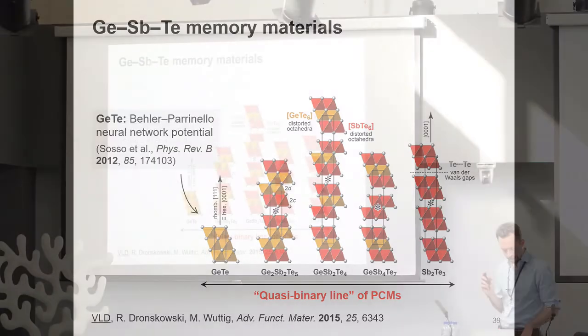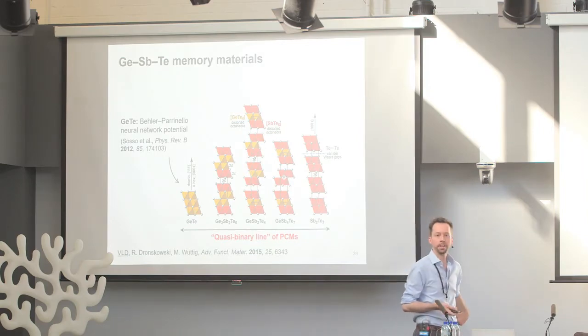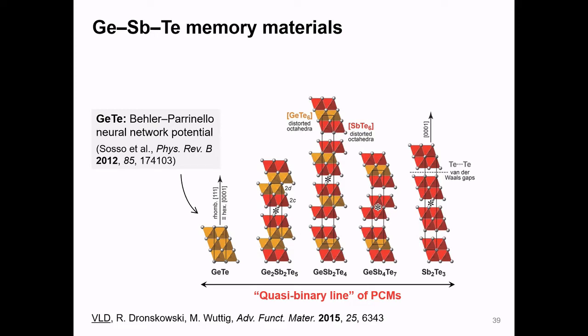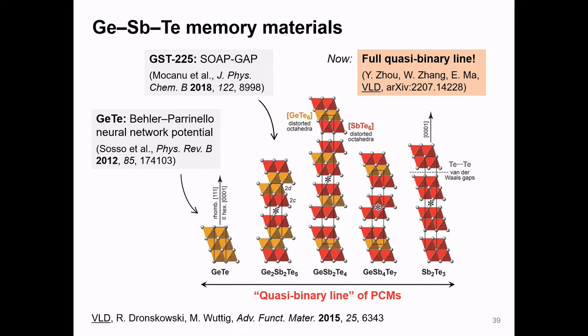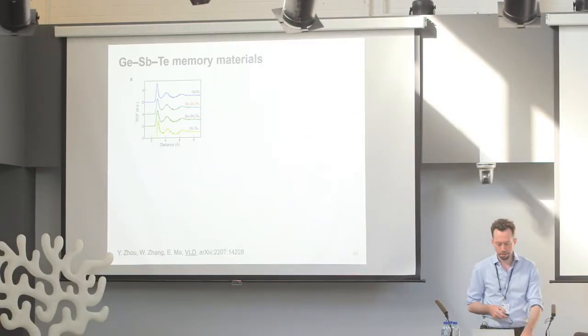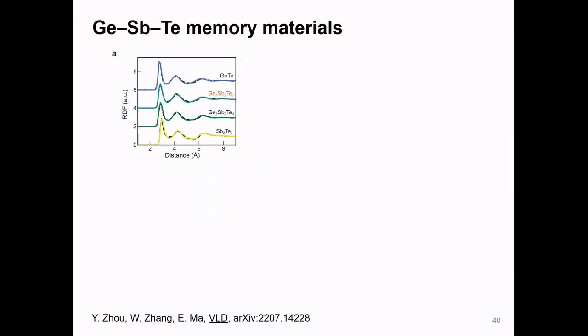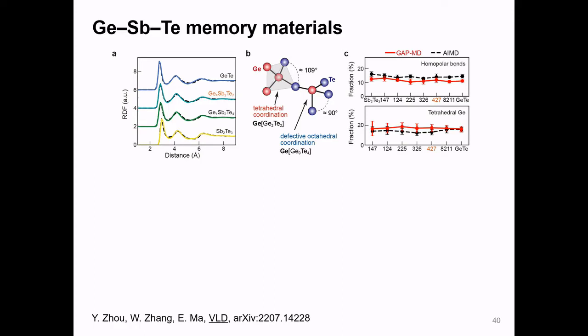So just to briefly credit other people's work. So this actually goes back to 2012 when Gabriele Sosso, who is now in Warwick, made a neural network type potential for germanium telluride. And they've done a lot of really interesting studies on that end point of the quasi-binary line. 2018, Felix Mocanu, actually here in the audience, made a potential for GST-225. That's the canonical phase change material that people like to study. And I'm not going to say any more about the potential. I think we're going to hear about that more. What we've now said, can we make a potential which does this entire line, which has seen training data for all the phases on that line from germanium telluride to antimony to tellurium. So we've done that. Well, Eugene has done that. We've just uploaded a preprint, so you can read the details there. But again, we've validated the potential. We've shown that we can reproduce structural properties. And again, because they are quite intricate, we have to make sure they're okay along the whole line.